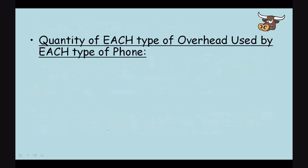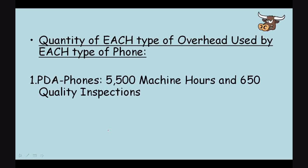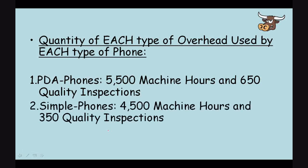Now let's look at the quantity of each type of overhead used by each type of phone. For the PDA phones, 5,500 machine hours were used and there were 650 quality inspections done throughout the year. For the simple phones, there were 4,500 machine hours used and 350 quality inspections done. Again, this is all given information.